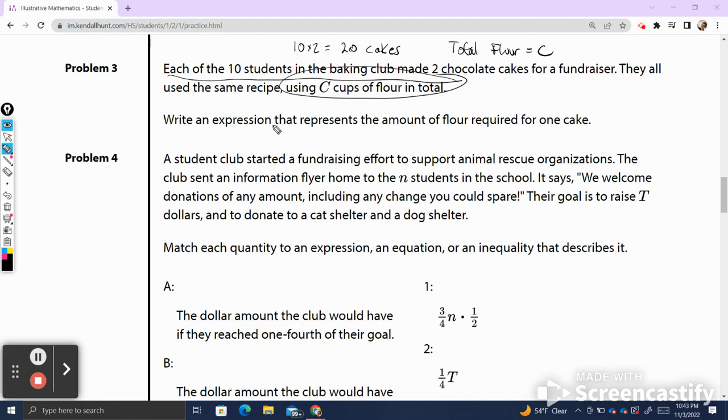The question is asking us to write an expression that represents the amount of flour required for one cake. So if they had, let's go ahead and set a variable for this. The amount of flour required for one cake, we're going to call it F. So they made 20 cakes. Each cake had F flour in it. If F is the amount of flour required for one cake, which makes the total amount of flour they used 20 cakes times F.